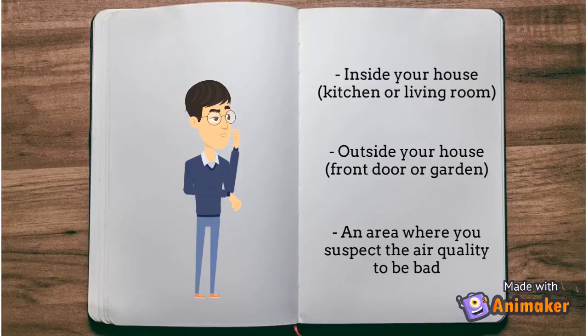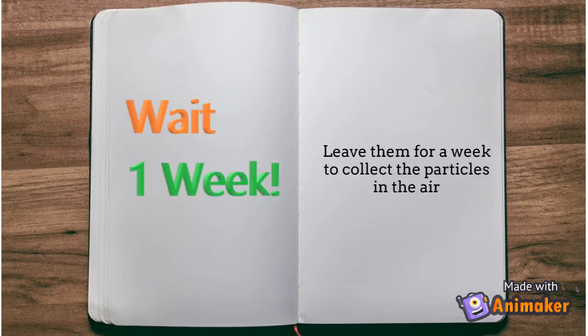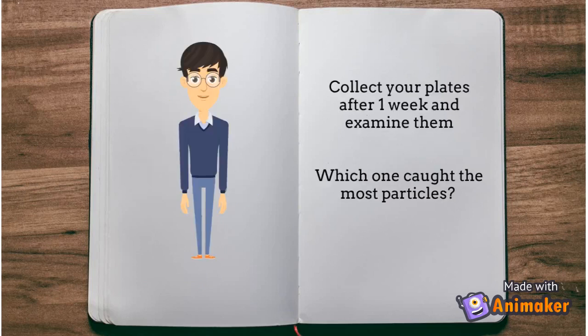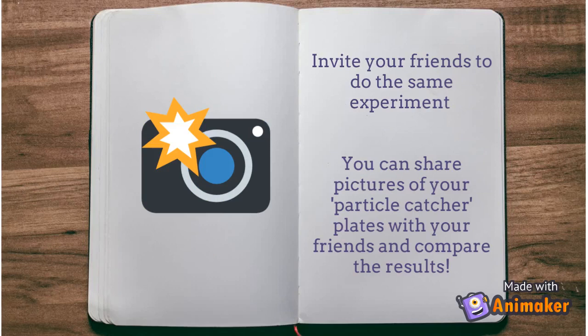Decide where you want to hang your plates. Hang your first plate inside your house, either in the kitchen or the living room. Hang your second plate outside your house where cars drive by frequently, or where you suspect the air quality to be bad. Leave your plates for a week so that they have enough time to catch the particles in the air. After one week, collect your plates and examine them. Can you see the particles stuck on the plates? Compare them to see which one caught the most particles. Invite your friends to do the same experiment and share pictures of your particle catcher plates to compare the results.